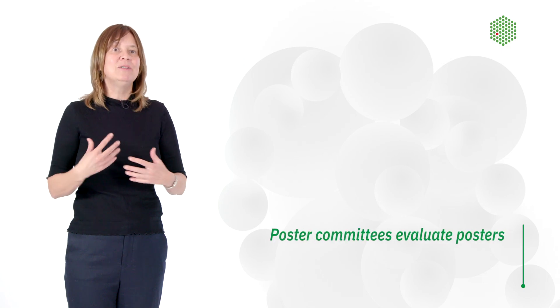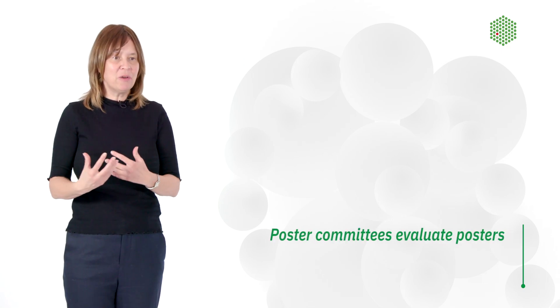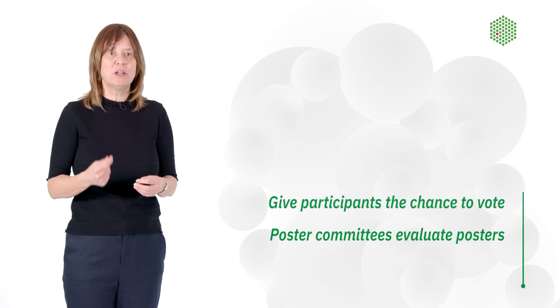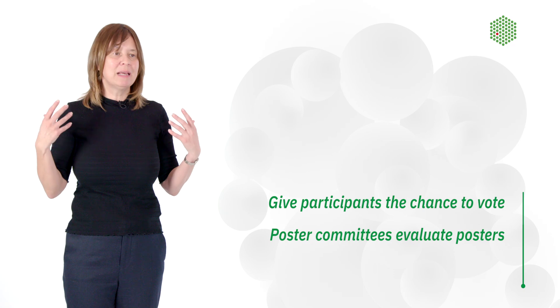The poster committee that's there to evaluate the posters usually splits up the task, and assigned posters are usually between 10 and 20 posters you have to look at and evaluate, and it usually works very well. Another way of judging posters, which I think also works well, is to give the participants one or two votes so they can vote for their favorite poster. I think both settings work well, and the organizers simply have to choose what they find is the best way.